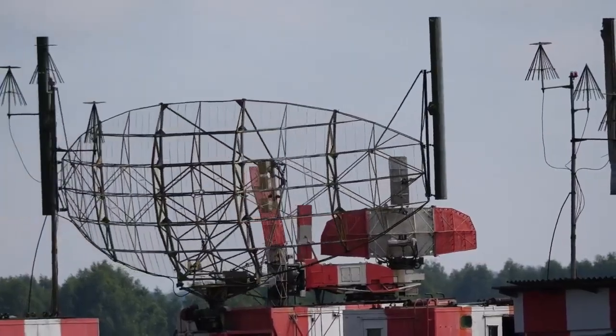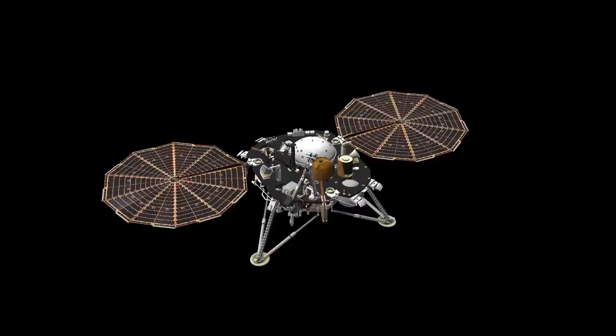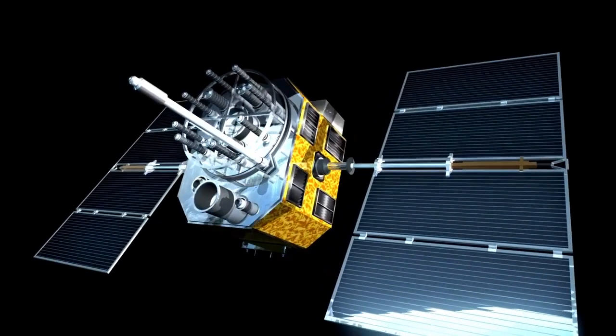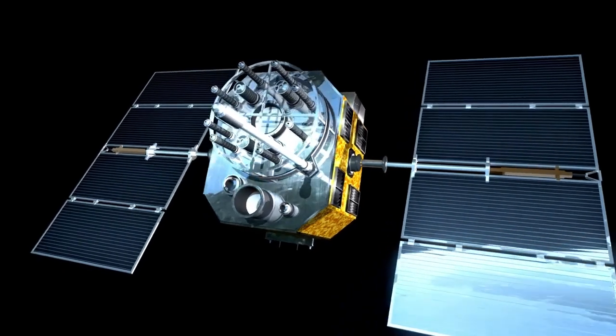This milestone highlights the ingenuity and resilience of the spacecraft, which is now over 15 billion miles from Earth, making it humanity's most distant emissary. In October 2024, Voyager 1 experienced a communication anomaly.